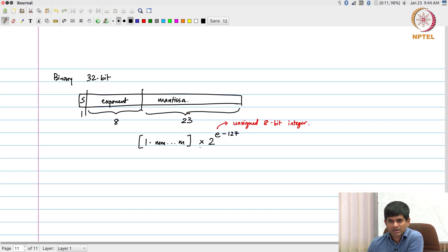What happens over here? This 1 dot MMM, the maximum value, or rather the minimum value that I can have over here, is 1.000, which is equal to 1.